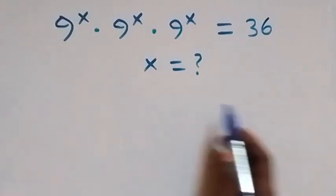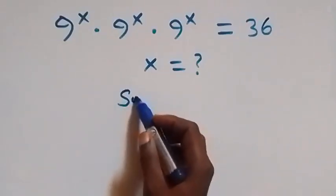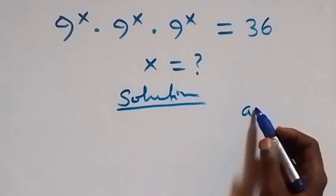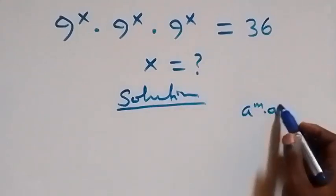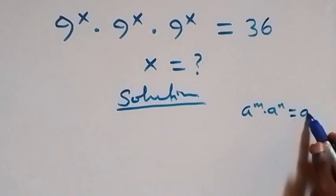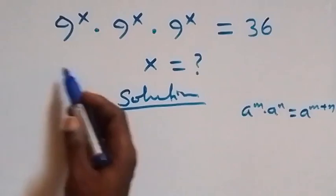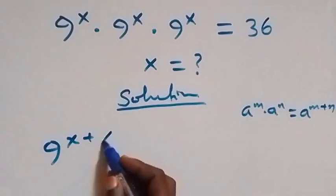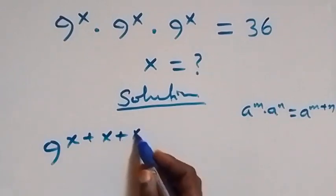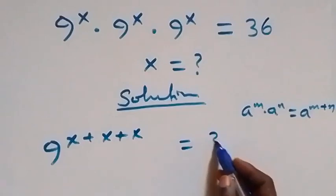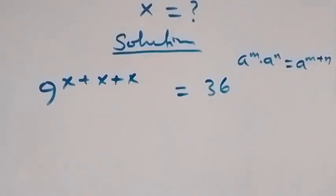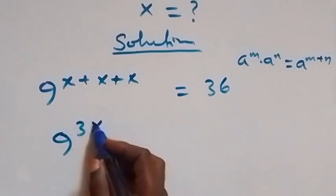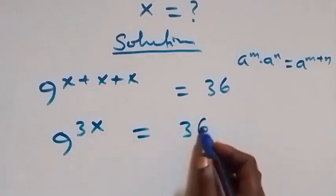Hello, you are welcome. We will solve this exponential equation. This follows from the rule: a raised to power m times a raised to power n equals a raised to power m plus n. So we can write it as 9 raised to power x plus x plus x equals 36, which becomes 9 raised to power 3x equals 36.